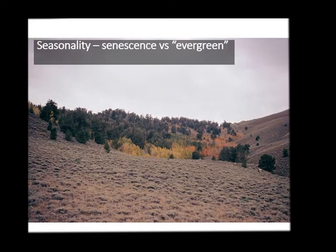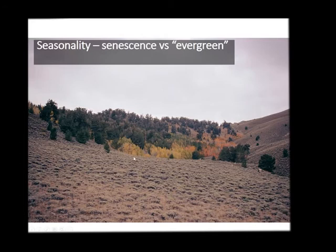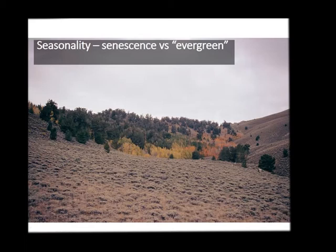Here's an example of two different strategies for dealing with moisture limitation, and one is senescence. This is on White Mountain in California, just to the east of the mountain range I just showed. What you've got is aspen down here — you can see it's senescing — and then you've got evergreen species. It's just a different strategy for dealing with the same problem: moisture and temperature variation. And these are bristlecone pine. This is in the area that's got the oldest known living trees. Those are in the White Mountains.